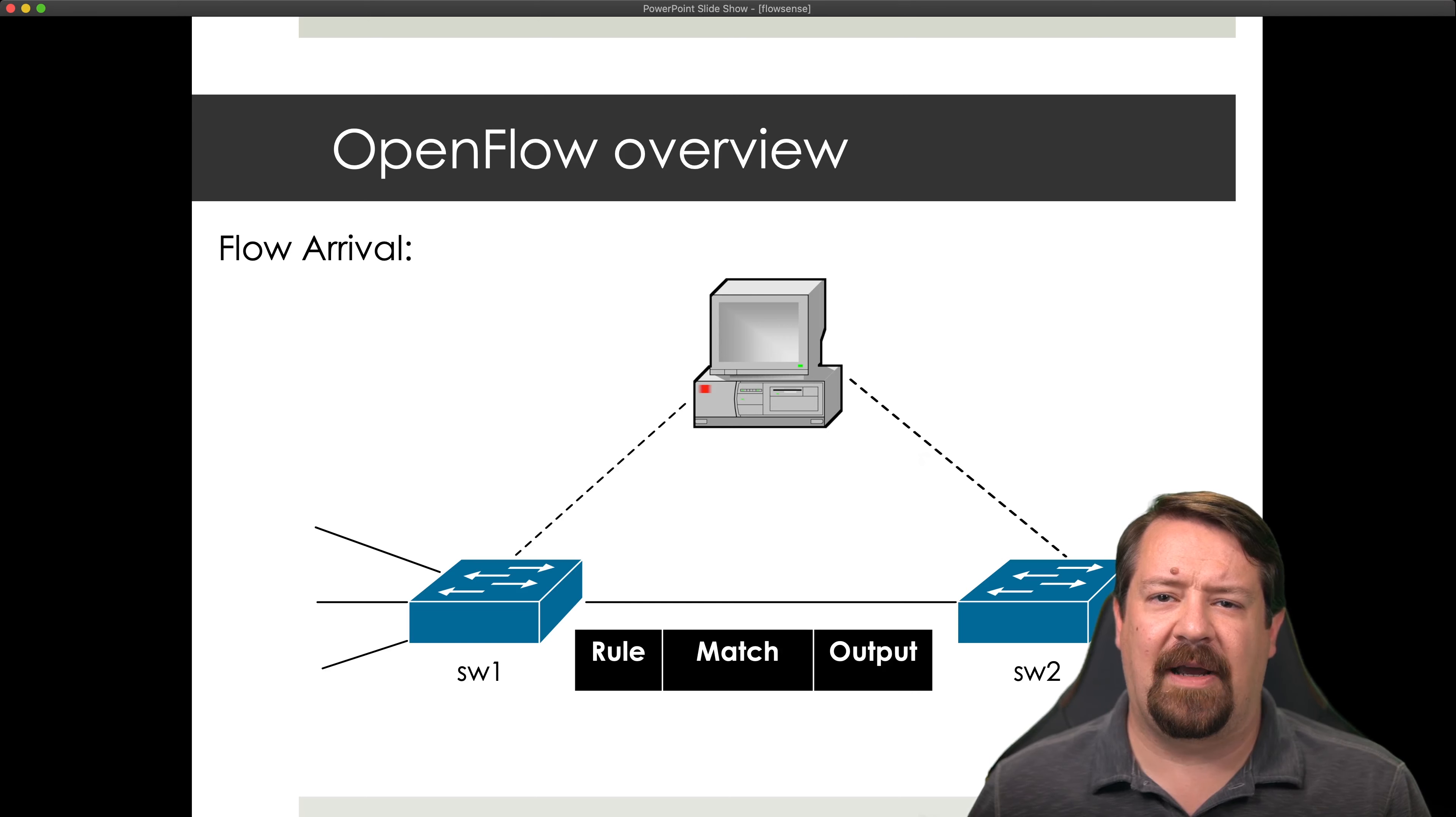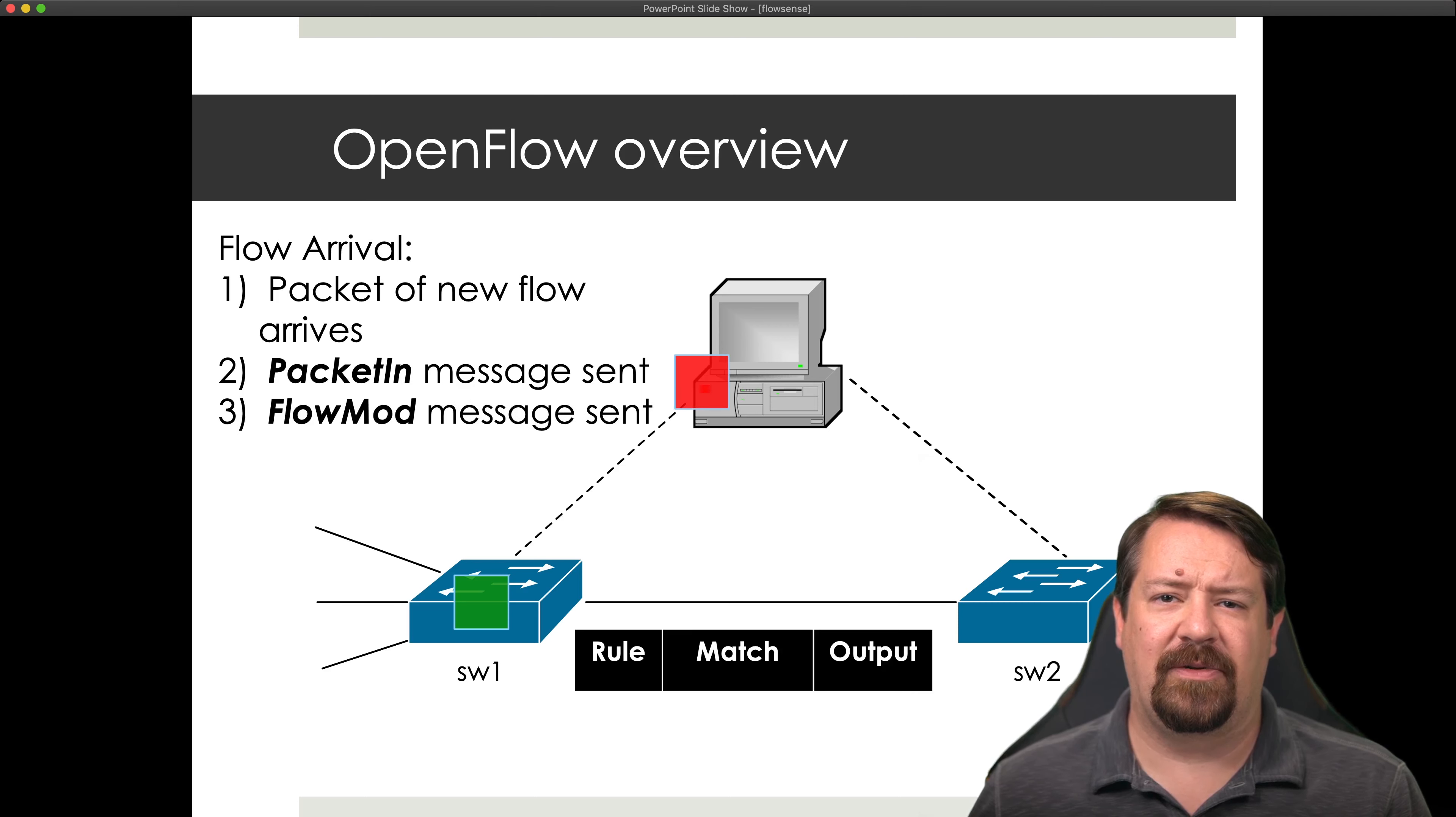As a quick review, the switch operation has a set of rules in a table where there's a match and a corresponding output port. As a packet that matches a new flow arrives, the switch generates a packet in message and sends that off to the controller, which can then create a rule for this new flow and put that rule in place on the switch. Or it could modify an existing rule. So now we have a rule that will match these packets and tells the switch to output them via port 2. Then when subsequent packets arrive, they don't need to go through this whole process again.